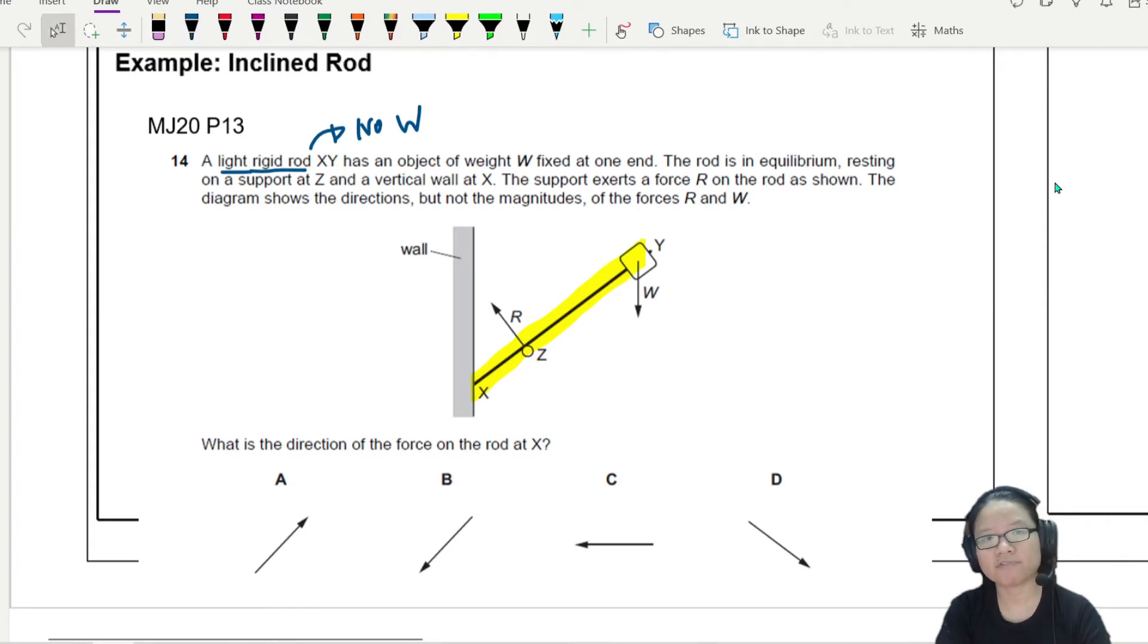The support exerts a force R - maybe it's a pivot, hinge, or nail. The diagram shows the direction but not the magnitudes of the forces R and W, just the direction. What is the direction of the force on the rod at X?